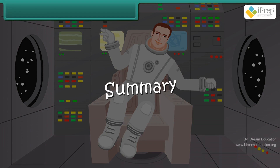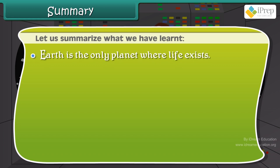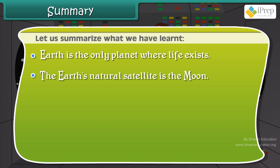Let us summarize what we have learned. Earth is the only planet where life exists. The Earth's natural satellite is the Moon. There is no gravity on the Moon. The area outside the Earth is space.